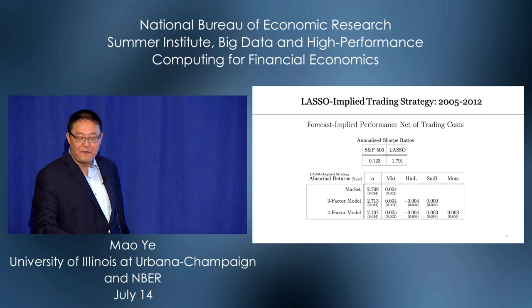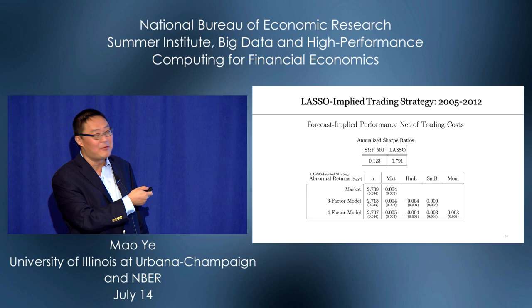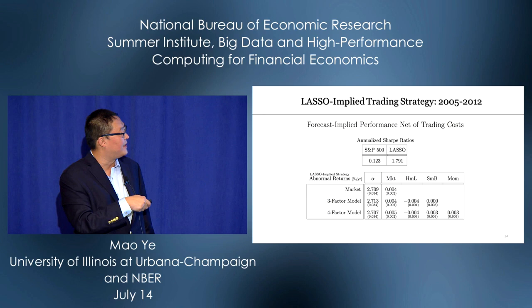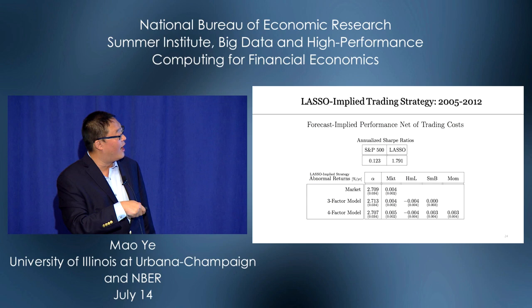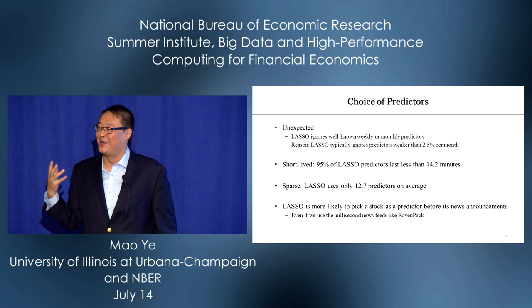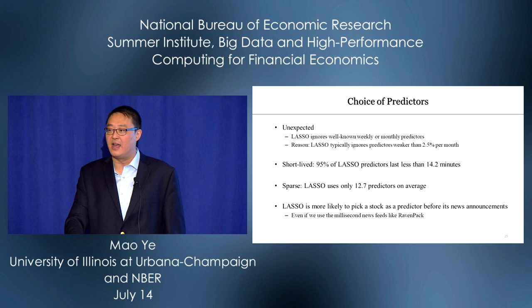What do we find? The LASSO-implied strategy works really well. During our sample period of 2005 to 2012, the Sharpe ratio of the S&P 500 is 0.123. But the Sharpe ratio of the LASSO-implied strategy is about 1.8, and we have an alpha of 2.8. If we were a hedge fund, that would be the last slide — but we're writing papers, and we're economists, so we need to find an economic interpretation.